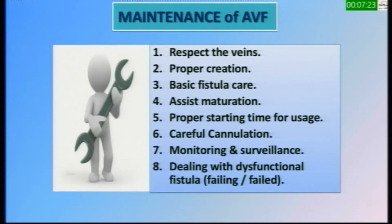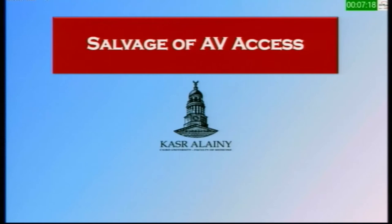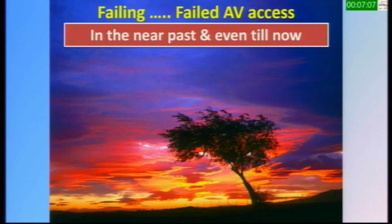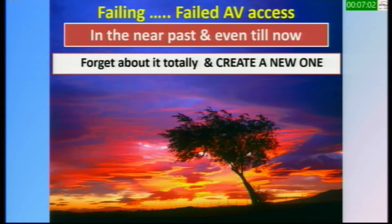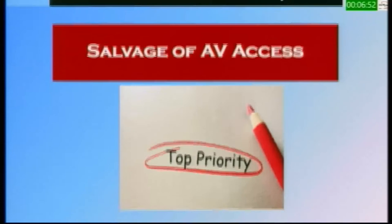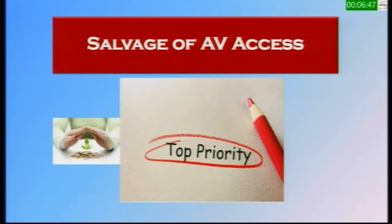Here are the items of maintenance of AV access. I am going to focus on salvage of AV access — the failing and failed AV access. In the near past, and even until now, when we have a failing access, the approach is to forget about it and create a new one. What happens? We exhaust all available accesses over time and end up with no available access for hemodialysis. So salvage of an access should be the top priority, because it saves other veins and buys time.